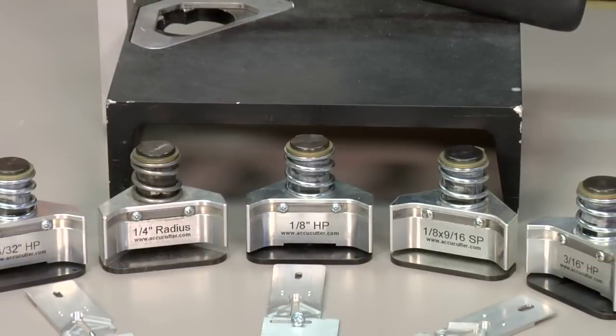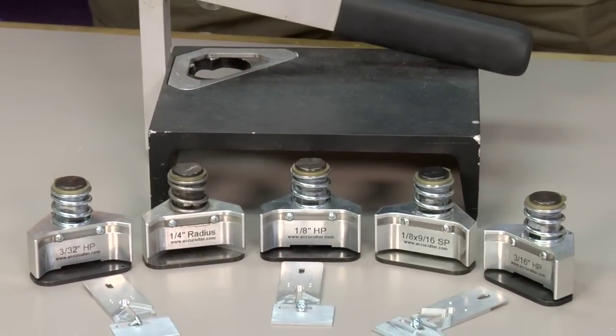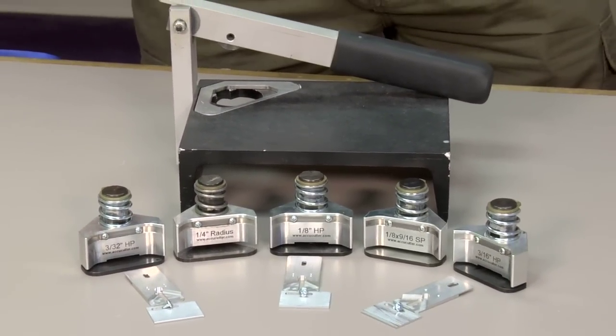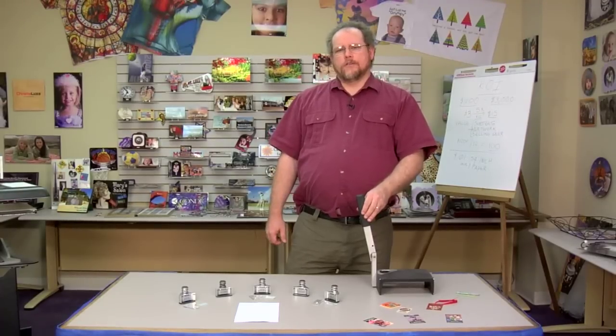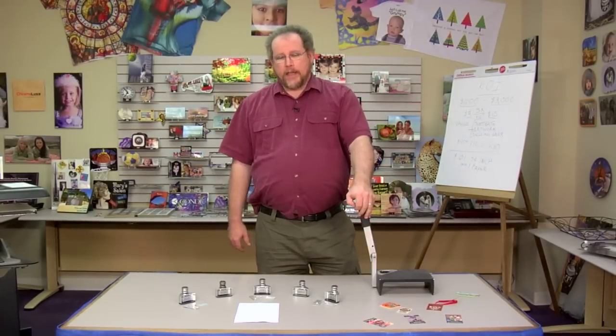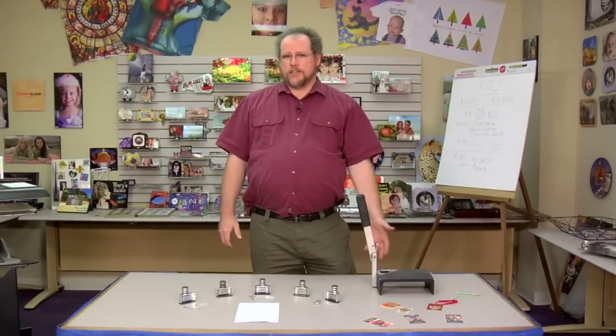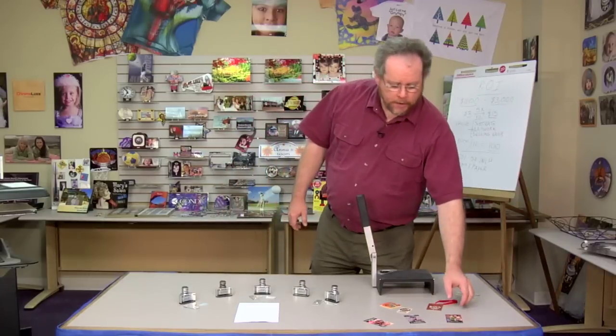Hi, this is Andy with Condi Systems and today I'd like to introduce you to the AccuCutter CornerMates. This product is quite useful for trimming corners of aluminum with ornate designs or even punching holes into the aluminum. Very useful for making keychains or luggage tags, anything out of the aluminum products that we do sell.